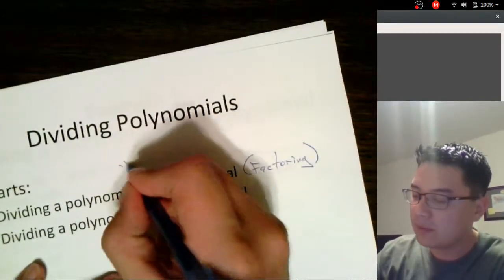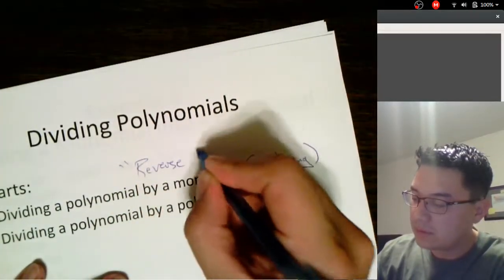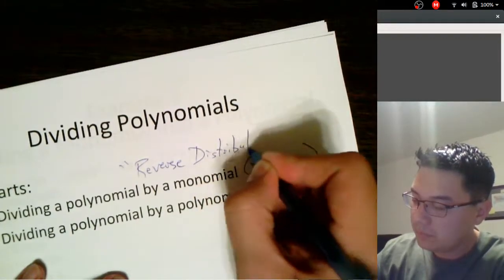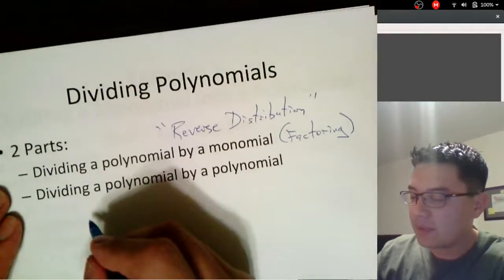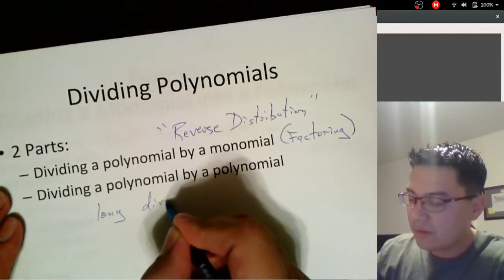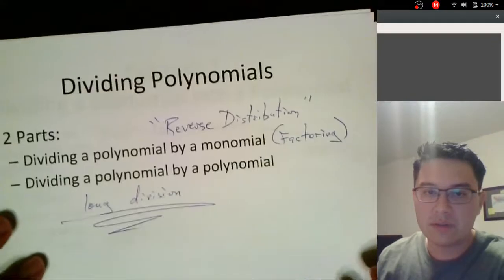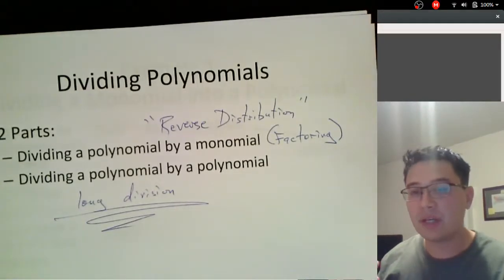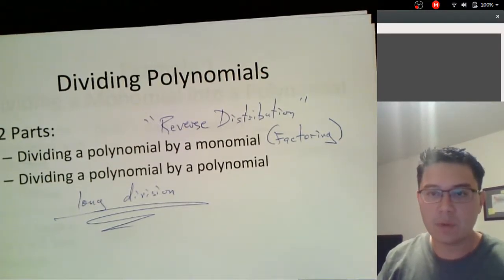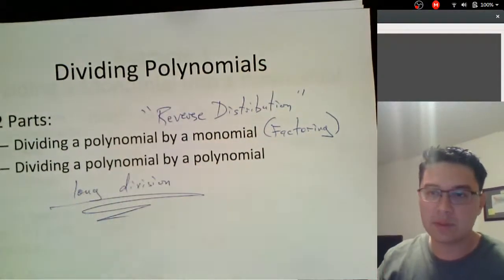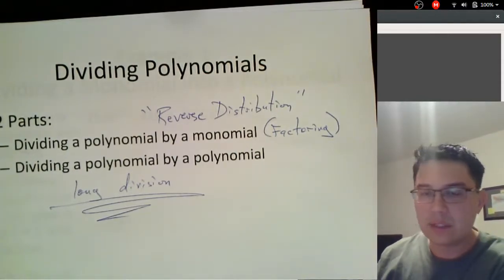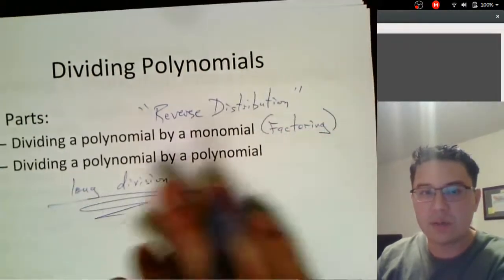Reverse distribution is actually a better way of thinking of this — reverse distribution is really what we're going to be doing here. For dividing a polynomial by a polynomial, we need something called long division. This is one of the harder things that we do in Algebra 2. I want you guys to be exposed to it and able to solve some simple ones — some that have remainders and some that don't. We're going to skip synthetic division so we can get into the quadratic unit and deal with square roots.